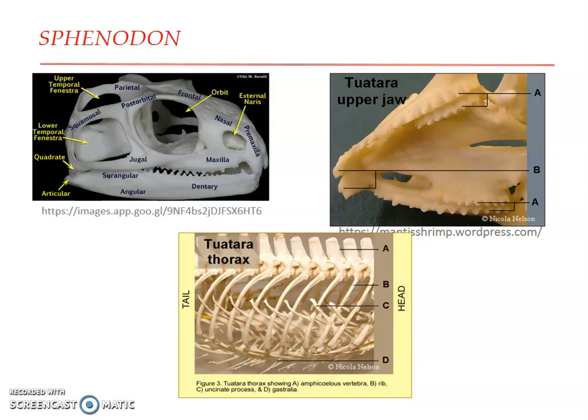Similar acrodont teeth are also found in snakes, but the function is very different. Another important feature is the presence of a third eye, the pineal eye or parietal eye, located in a parietal foramen in the parietal region of the skull — on the forehead region — covered with a transparent scale. This pineal eye has a lens, a pigmented retina, and is supplied with nerves from the brain, making it a light-sensitive sensory organ. A similar median eye is found in some lizards as well.